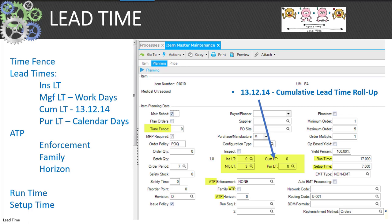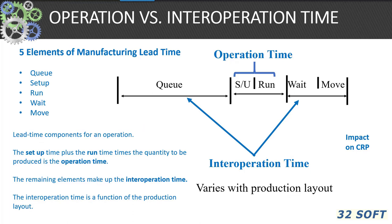Lead time elements include lead time fences, lead times available to promise, run time, setup time, etc. Operation versus inter-operation lead time: the five elements of manufacturing lead time are setup and run (operation lead times) and queue, wait, and move (inter-operation lead times). Accurate representation of these lead time elements will play heavily in your ability to use capacity and execution functions in your ERP system.